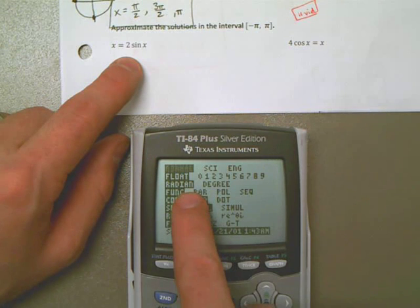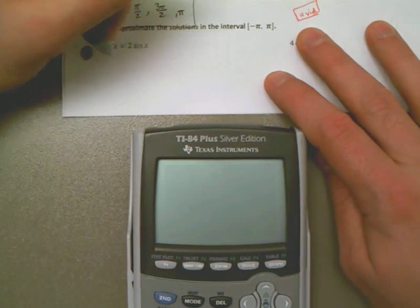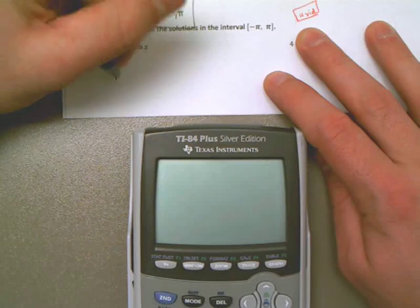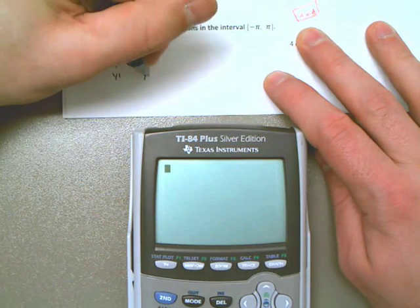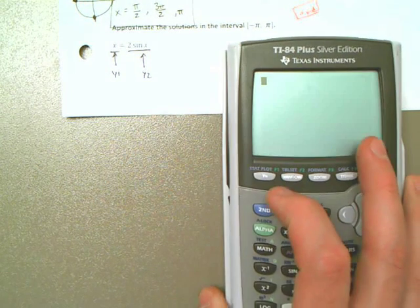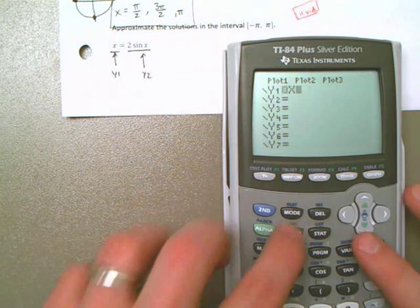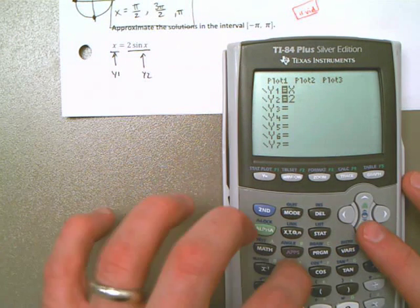And what I'm going to do is this. I'm going to say this over here is going to be y1, and the right side of my equals sign is going to be y2. I'm going to graph both of these lines. And so if I do that, y equals, y1 is x, and y2 is 2 sine of x. I'm in radians mode.